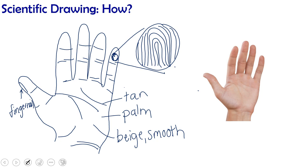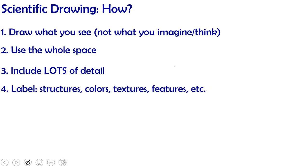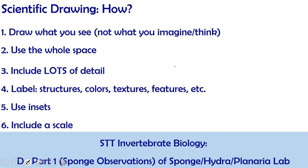So just as a review, how we do scientific drawing. Rule number one is to draw what you see, not what you imagine or think. Rule number two is to use the whole space. Number three is to include lots of detail. Four is to label structures, colors, textures, features, and whatever else you can label on there. Five is to use insets. Six is to include a scale. And now for our STT invertebrate biology, do part one of your sponge observations of your sponge hydra and pulinaria lab.